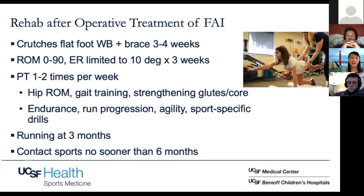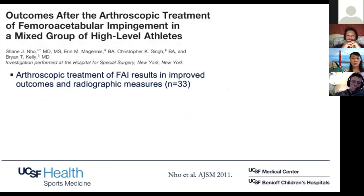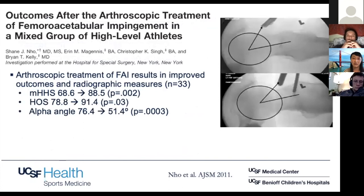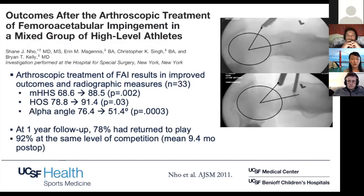Looking at outcomes after FAI surgery: in high-level athletes, they do quite well. This study looked at 33 high school and collegiate athletes with great improvement in modified Harris hip score and hip outcome score, as well as improvement in alpha angle. At one-year follow-up, nearly 80% returned to play, the vast majority at the same level of competition, taking about nine months to reach full competition level. I tell patients that even though you're allowed to return to contact sports at six months, that doesn't mean you're playing at full potential — it takes a few more months to really get tuned up for high-level sports.